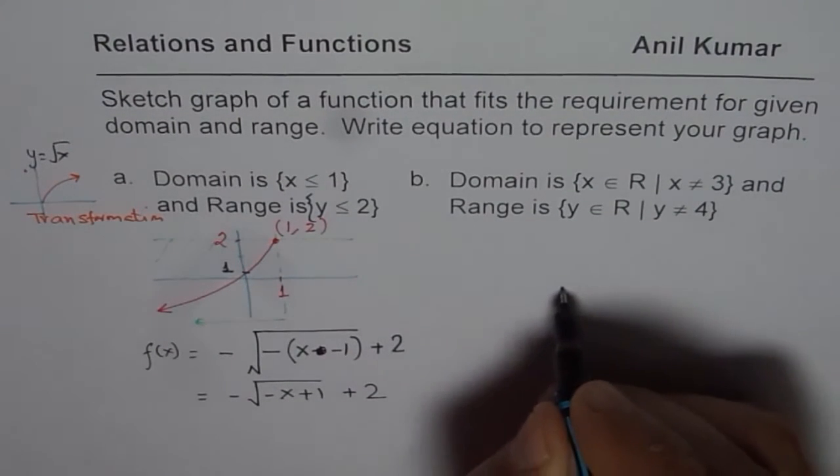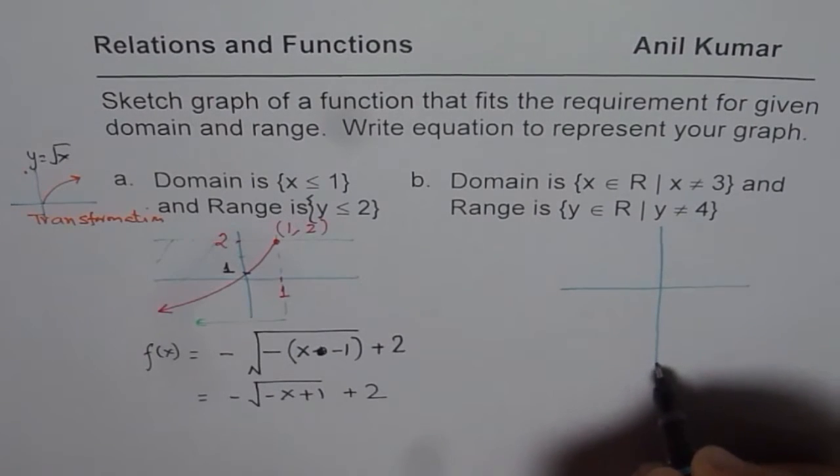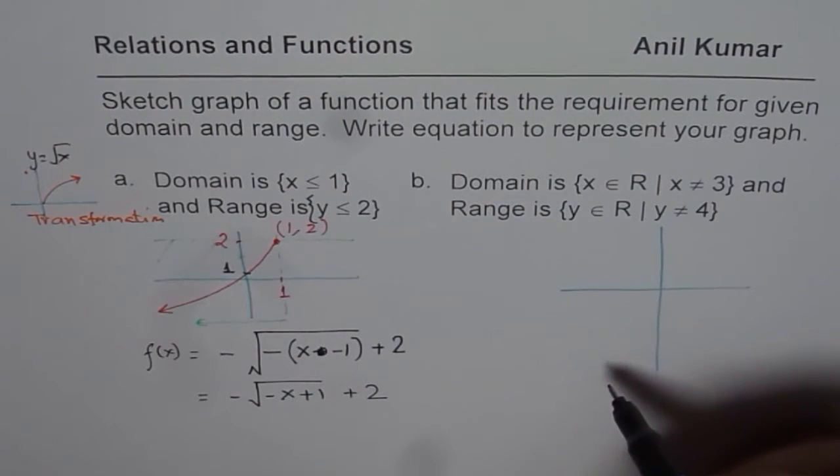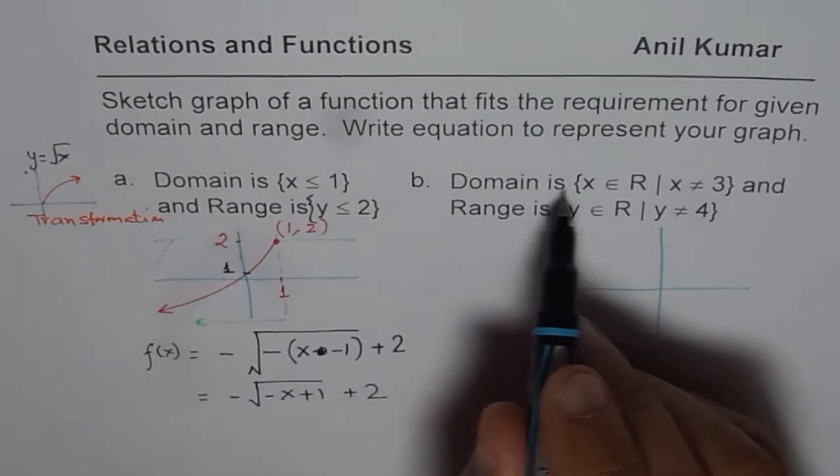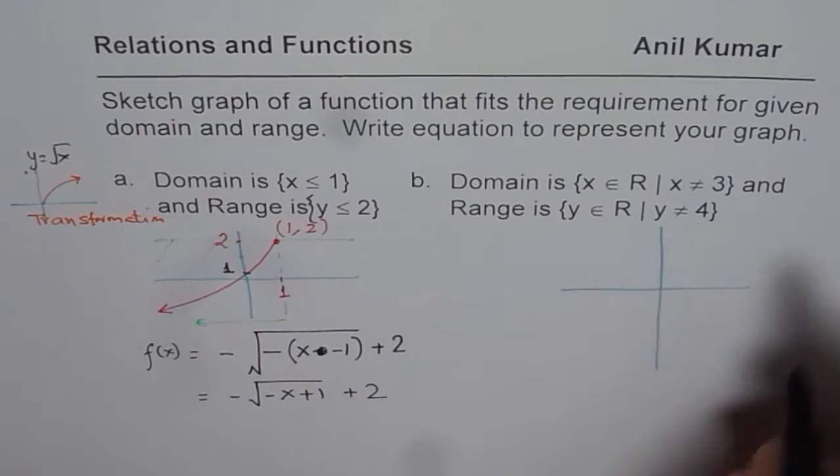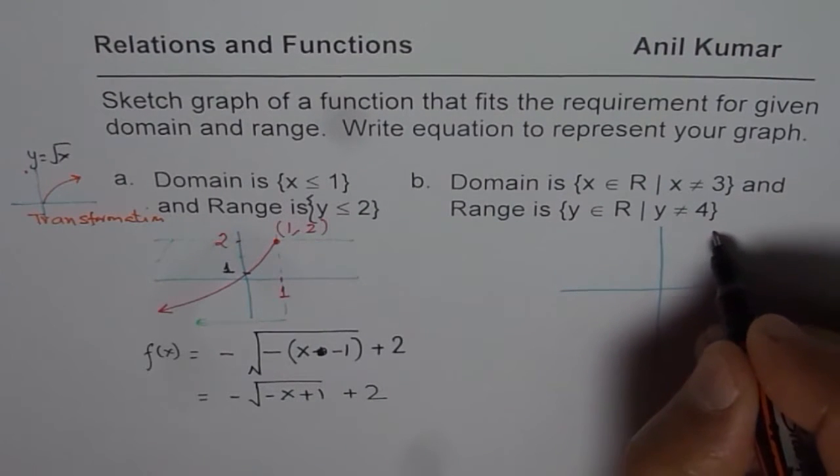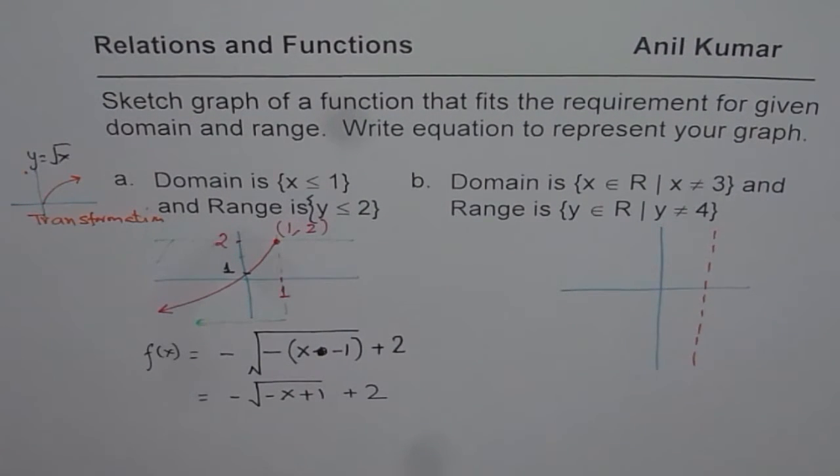So that could be the case when we take up this reciprocal function. So we have horizontal and vertical asymptotes. When we say domain is not equal to 3, that means we are saying we have a vertical asymptote at 3.